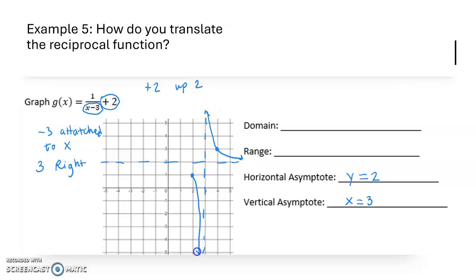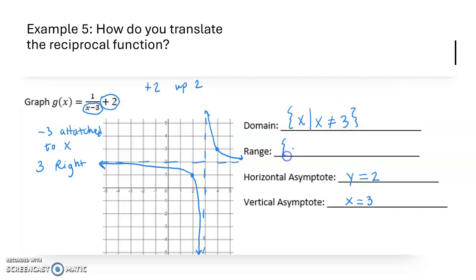So the domain is going to be all x-coordinates such that x is not 3, because that's where we have the gap. And the range is going to be y-coordinates such that y is not 2, because that's where we have our horizontal asymptote.